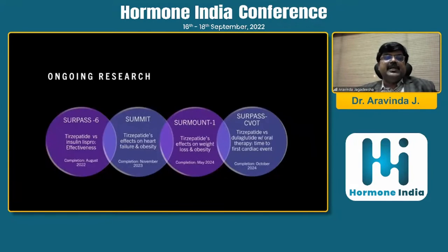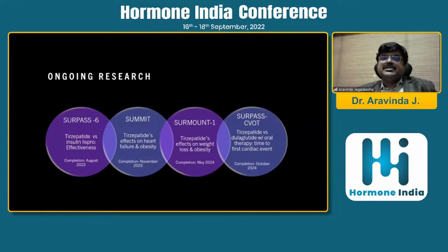Ongoing research — many trials are still to come. SURPASS 6 is comparing with insulin lispro. The SUMMIT study will evaluate its effects on heart failure and obesity, coming next year. SURMOUNT-1, examining its effect on weight loss and obesity, will come in 2024. And SURPASS-CVOT — tirzepatide versus dulaglutide, time to first cardiac event — will also come in 2024.